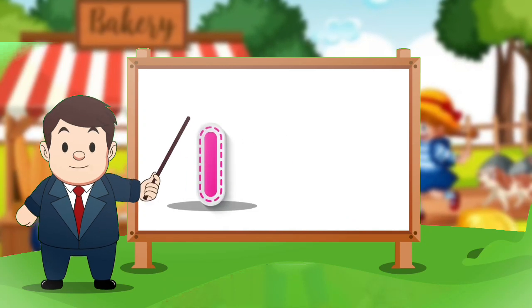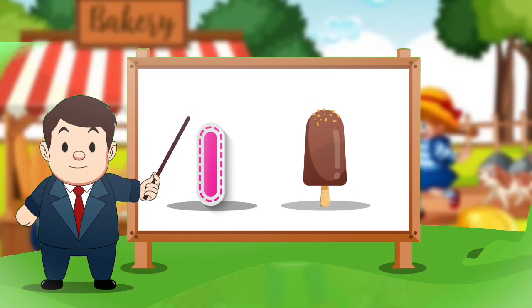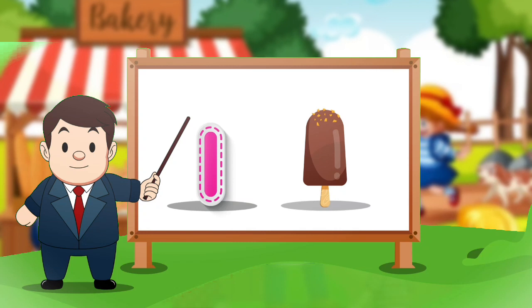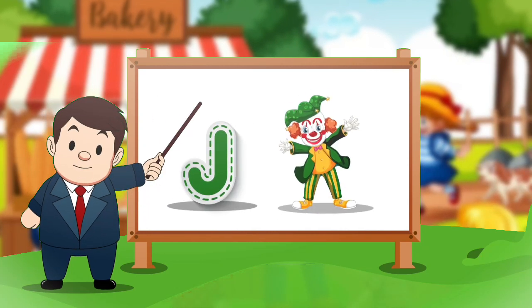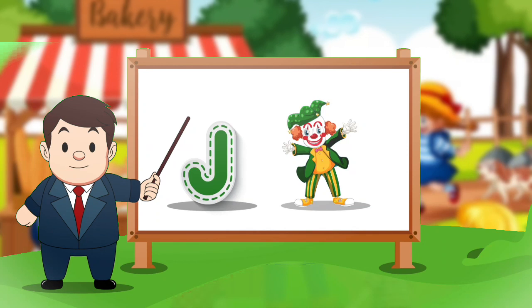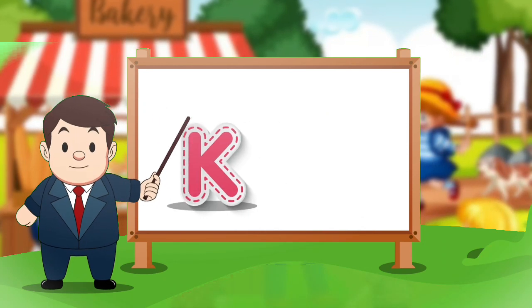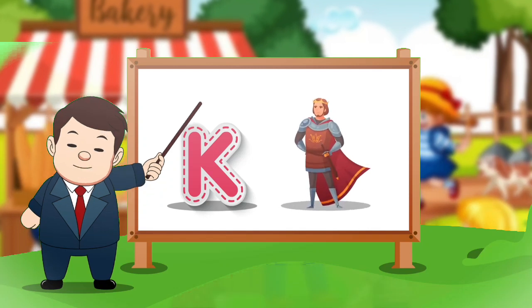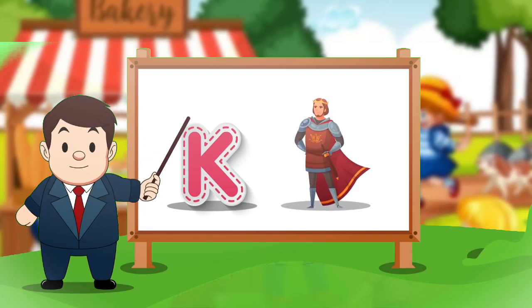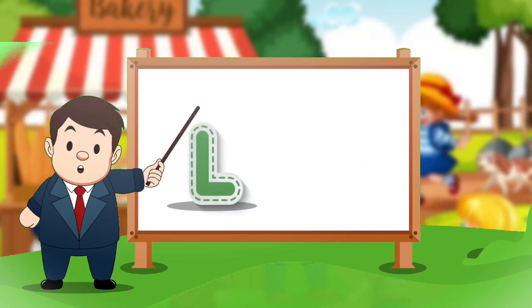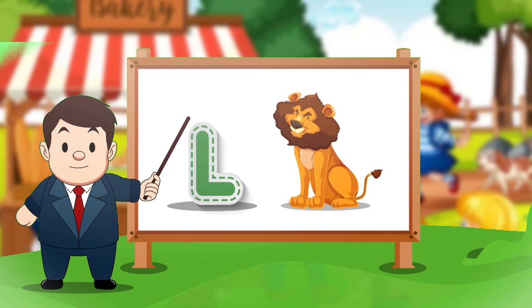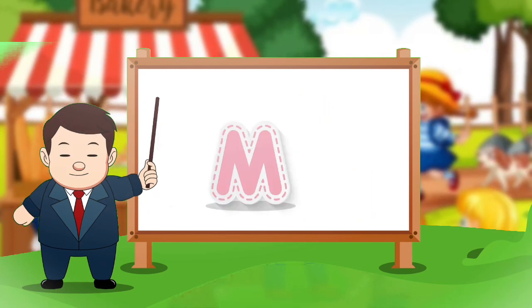I. I for ice cream. J. J for joker. K. K for king. L. L for lion.